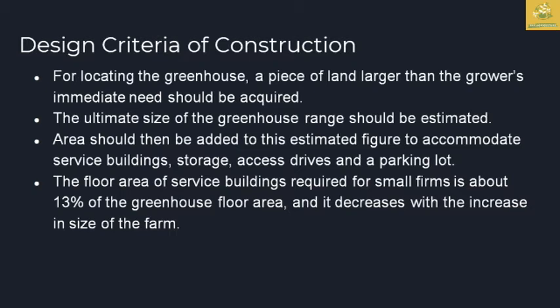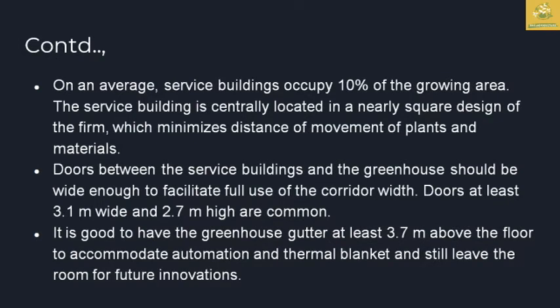To prevent shadow on crops, trees located on the east, south, and west sides should be at a distance of 2.5 times the height of the tree. For the location of a greenhouse, a piece of land larger than the immediate growing need should be acquired. The ultimate size of the greenhouse range should be estimated, and area should be added to accommodate salaries, service buildings, storage, access drives, and parking. The floor area for service buildings should be about 13 percent of the greenhouse floor area, decreasing with an increase in size.